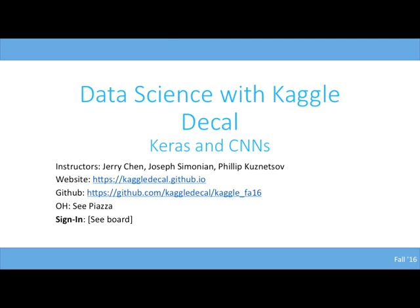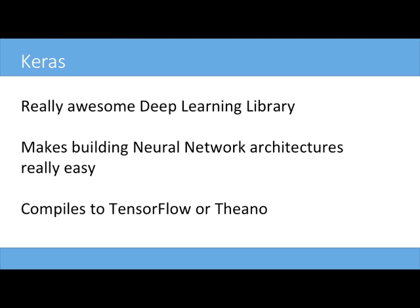Keras is basically a deep learning library, and the greatest win it has is its simplicity. Instead of focusing on building a neural network and making sure that every input matches every output, and things like the optimization and the loss function — all these little details that are always involved in your deep learning process — Keras handles it for you. You don't even have to worry about it. The only thing you need to do is just assign what optimization you're using and what loss you're using, and then you're good.